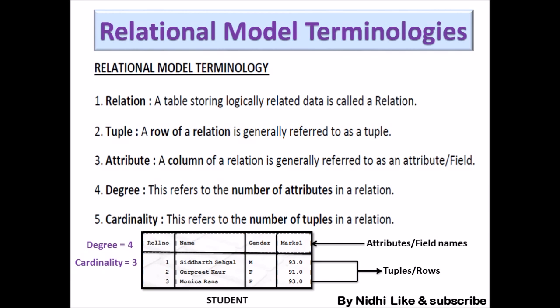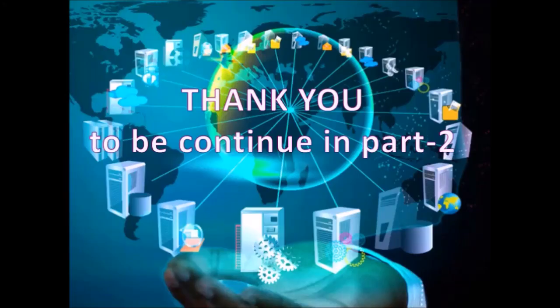Here you can see an example of a table named 'Student.' Student is the relation or table name. There are three rows, so there are three tuples. The number of columns is four, so the degree of this table is four. This example covers all the terms — relation, tuple, attributes, degree, and cardinality — using the Student table. That's all for this class; we will continue this unit in Part 2.